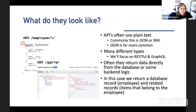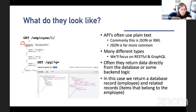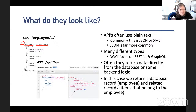Often what APIs do is return data directly from the database or some backend logic. We might have a database table with the word 'employee', their name, and some linked number of items. What we get back from this API is the employee and the items belonging to that employee. Down here you can see GraphQL, which works a bit differently. But again, we still see curly brackets, a key, and values — that key-value pattern.